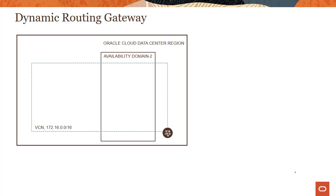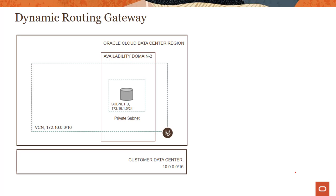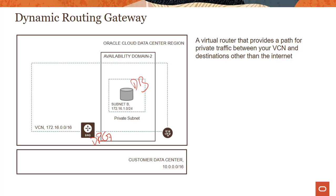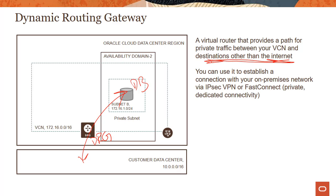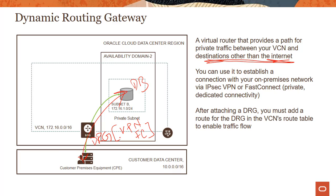Let's look at some other details. As you recall from the previous module, we looked into a gateway called the Dynamic Routing Gateway (DRG). Anytime you have an on-premises environment and want to connect to it — say you have a database running there — you would use this gateway in OCI called a Dynamic Routing Gateway. It's a virtual router sitting at the edge that provides a path between your private subnets and your on-premises environment. DRG is used for both VPN and Fast Connect.